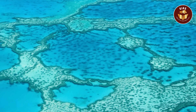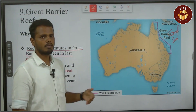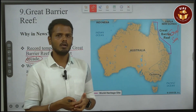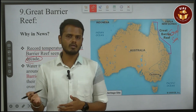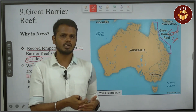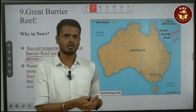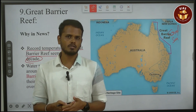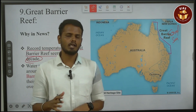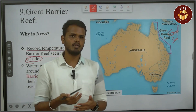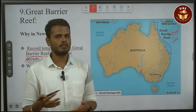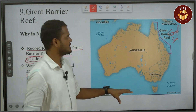If the temperature increases, the coral reef is not going to survive. There are certain conditions like temperature, salt level, or salinity level — there are a lot of problems affecting the reef.